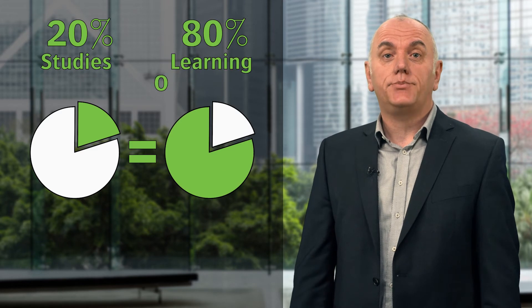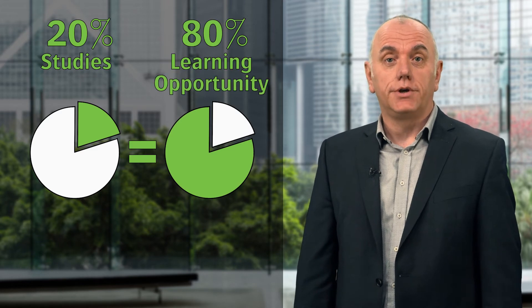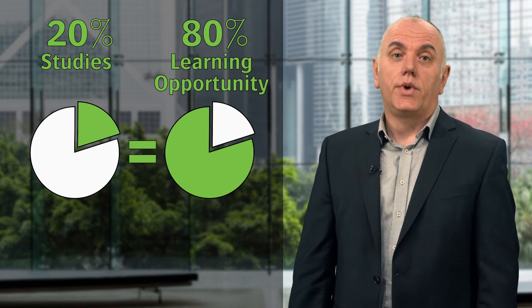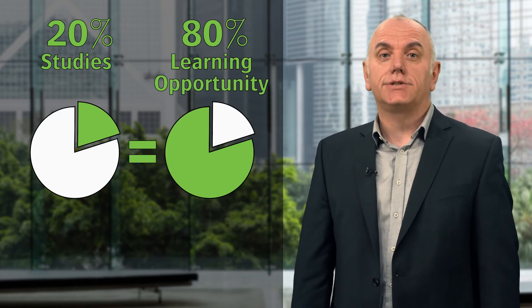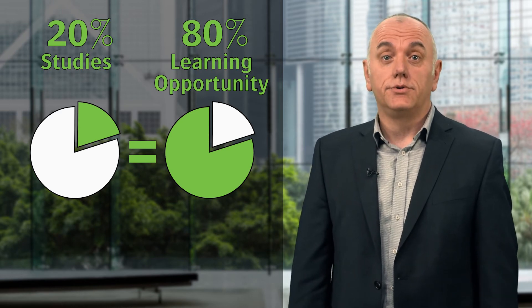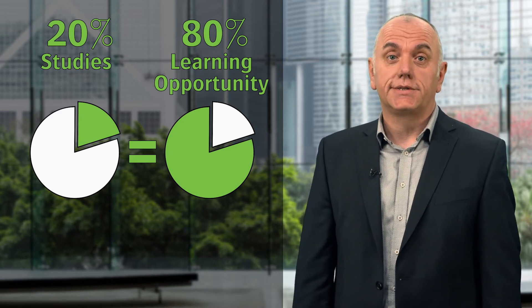Although traditional peer reviews are initiated with the best intentions, there are several drawbacks to them. Generally, 20% of the studies present 80% of the learning opportunity. So by randomly selecting studies for peer review, a lot of learning opportunity is missed.